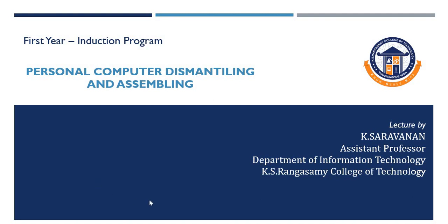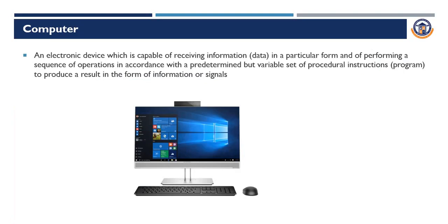Before that, what is a computer? A computer is a combination of both hardware and software — it is an electronic device capable of receiving information and data from the user, executing programs, and producing results in the form of information or a signal.